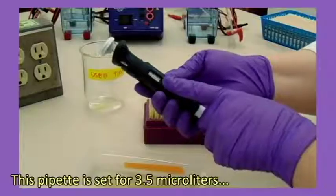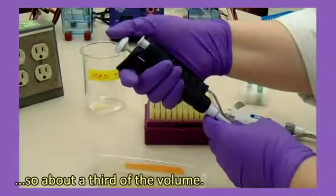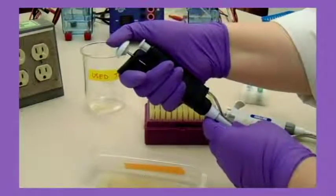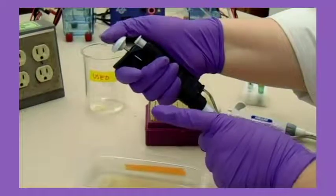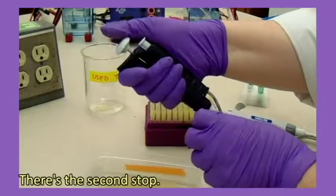This pipette is set for 3.5 microliters, so about a third of the volume. There's the first stop. There's the second stop.